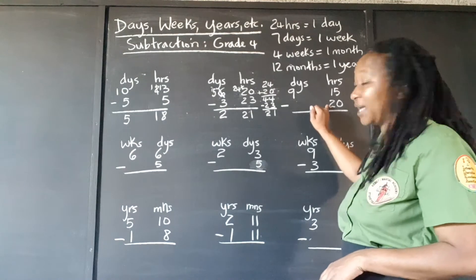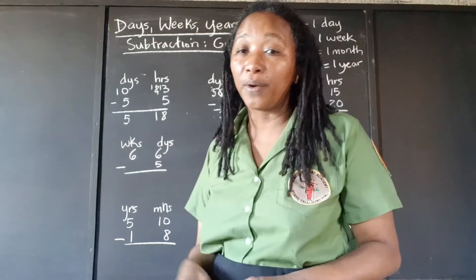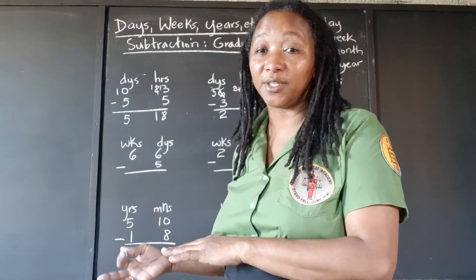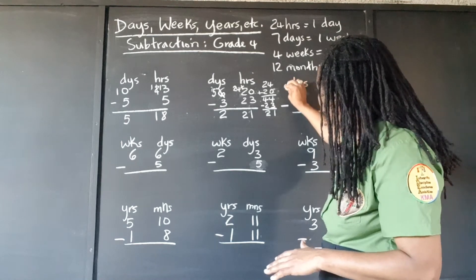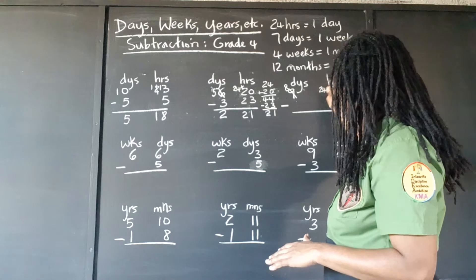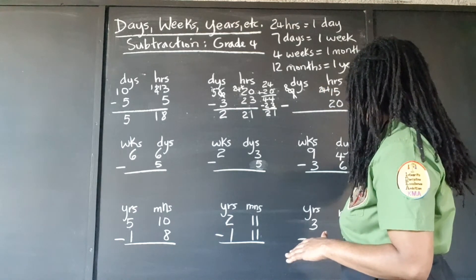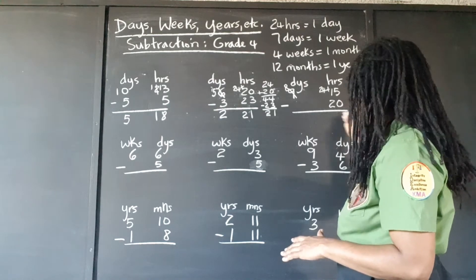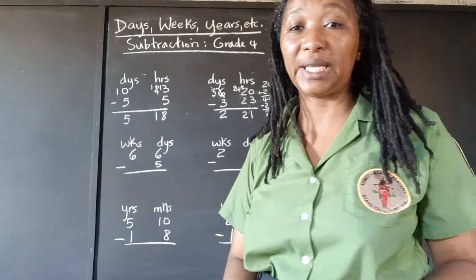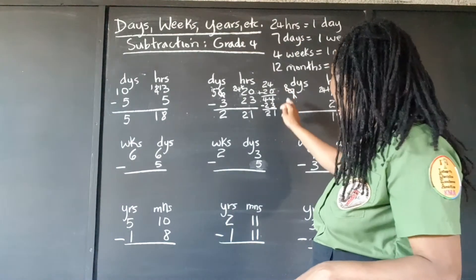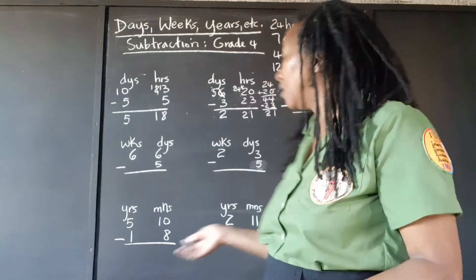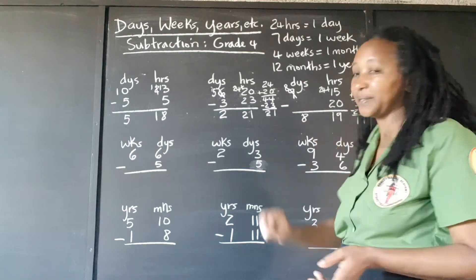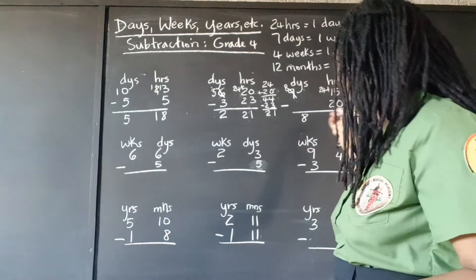Let's look at this one. We're taking 20 hours from 15 hours — again, we're going to need some help. We go over to the days, take one day and transfer it as 24 hours. When we take one day from the 9 days, we're left with 8 days. We carry it over as 24 and add it to the 15, getting 39. When we take out the 20, we get 19. So that's 19 hours. And for the days, there were no days to subtract, so we just bring back the 8. Final answer: 8 days and 19 hours.